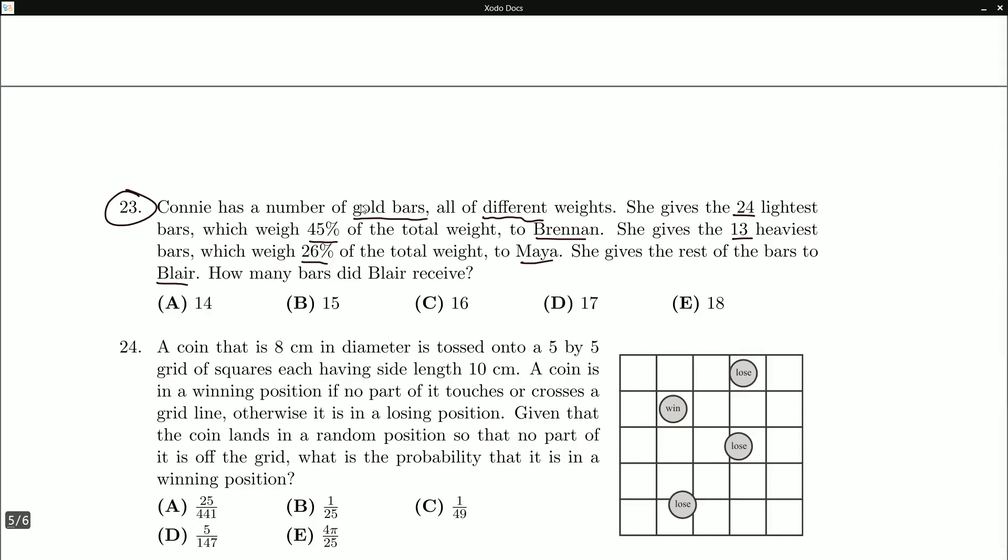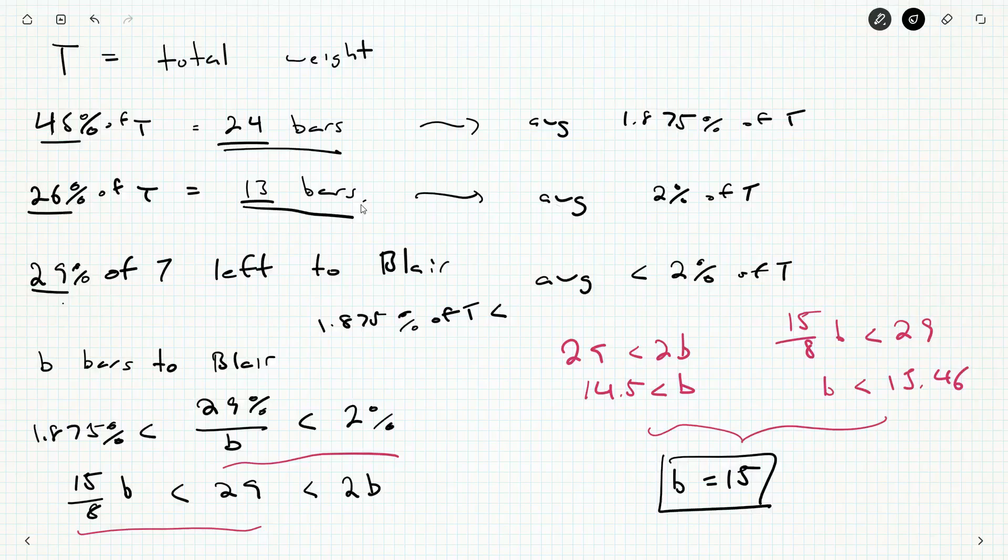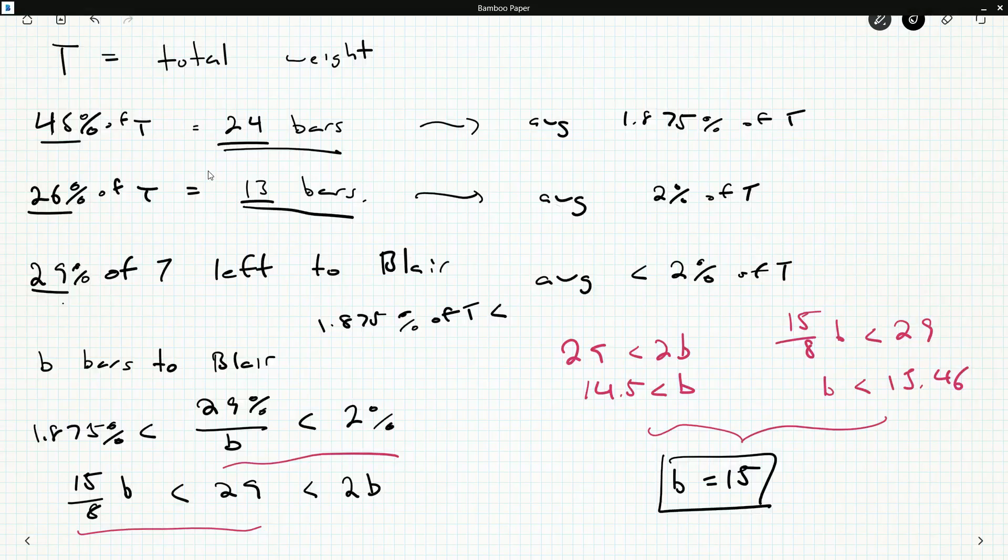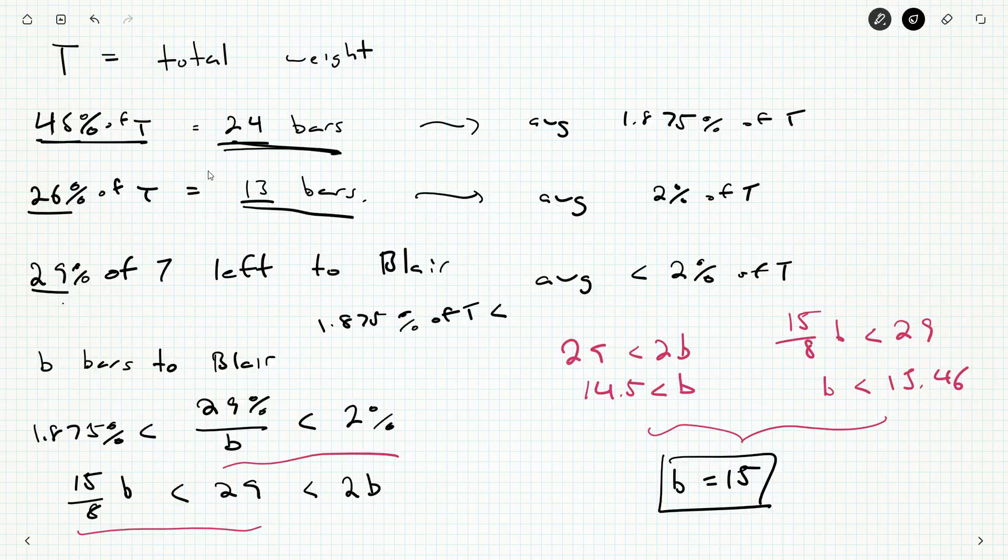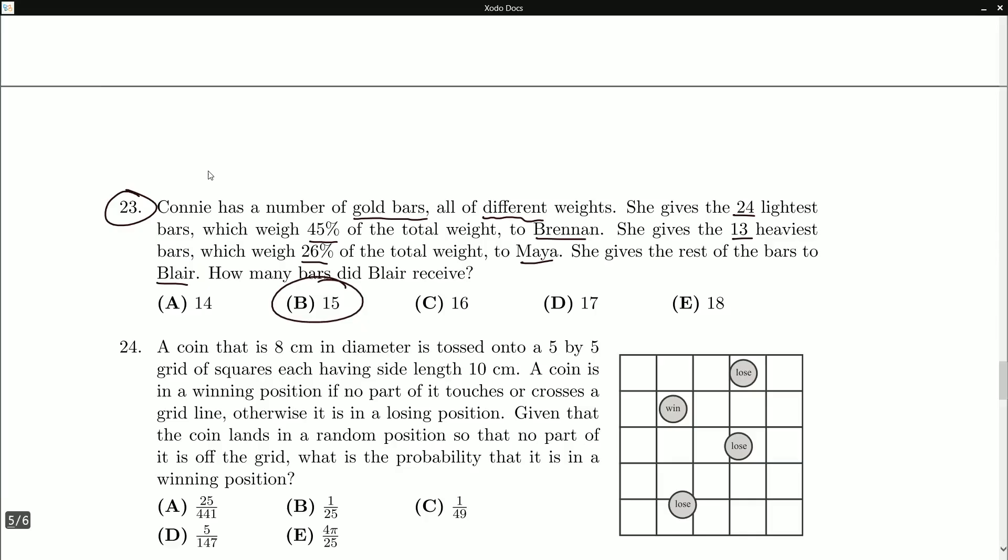Okay, I didn't quite know how to go through that one at the start, but given weights and a number of bars, average just seemed to pop out. So my answer here is B - B for Blair or B for bars. But there we go. We managed to meander our way through question 23.